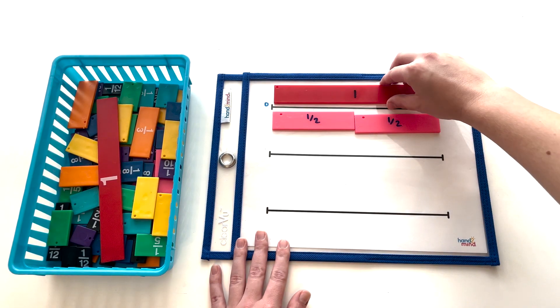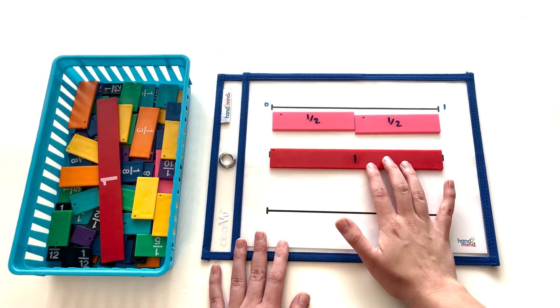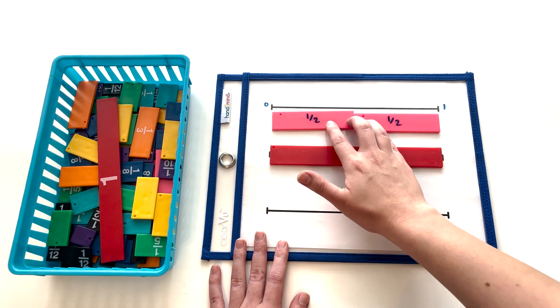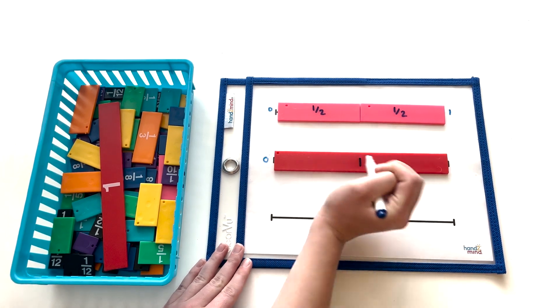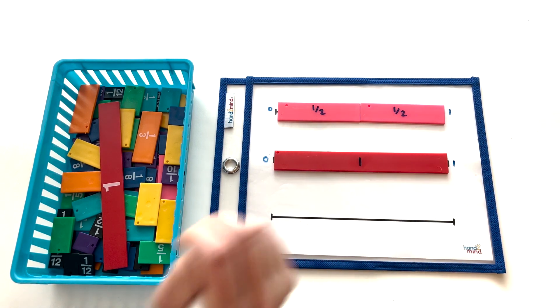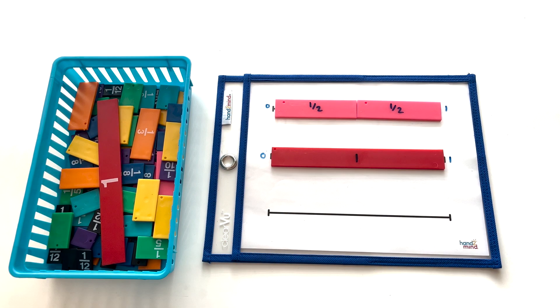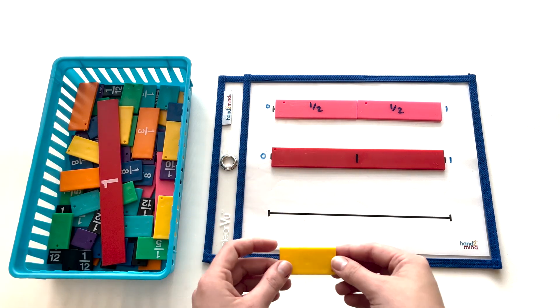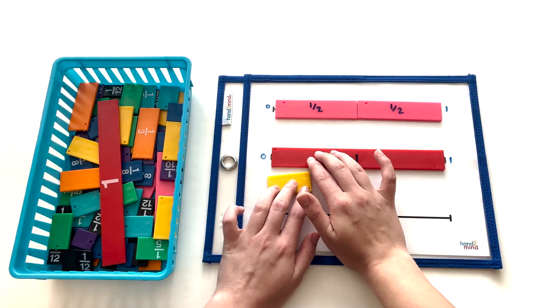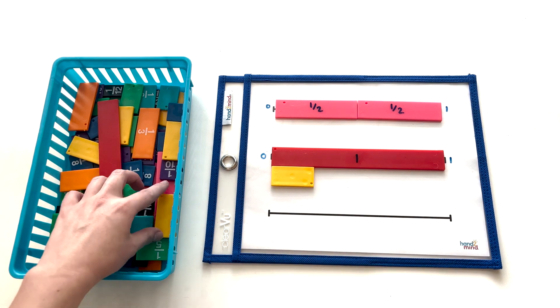Next we're going to find some more equivalent fractions. We will take our one whole piece and put it on our next fraction line and label again with zero on the left side and one representing one whole on the right side. Next we will explore how many yellow rainbow fraction tiles it takes to equal one whole.